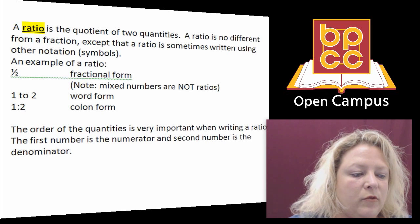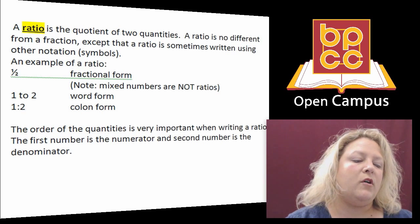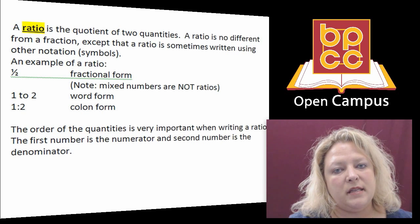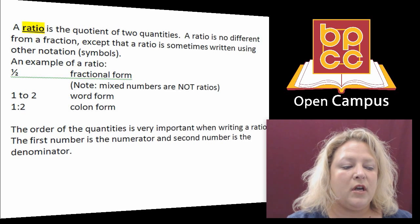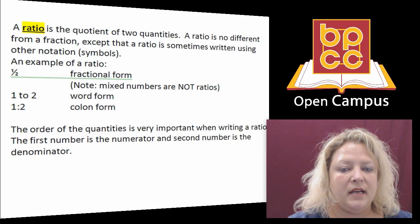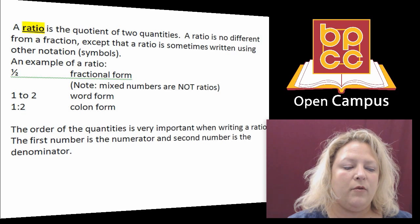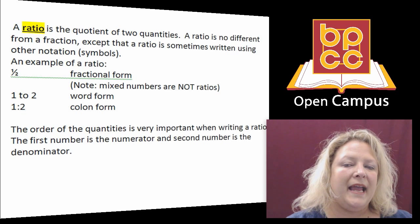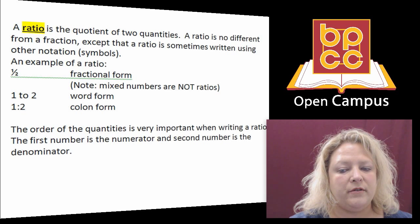A ratio is the quotient, and quotient, remember what that means, that is division of two different quantities. It has the same concepts as a fraction except that you use other notation and you can see that you can write it as a fraction, you can write it with the word 'to' in the middle, you can write it with a colon in the middle, and in this case we never use mixed numbers as ratios.